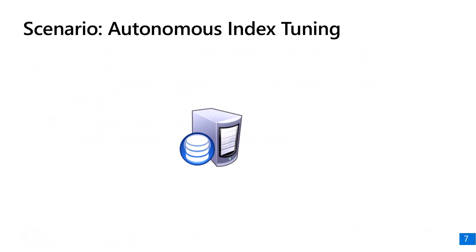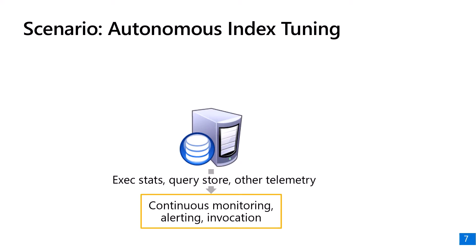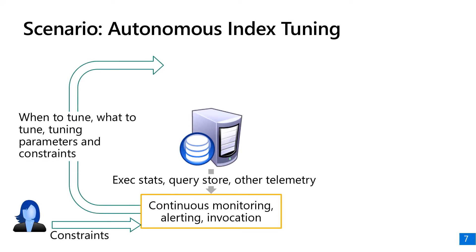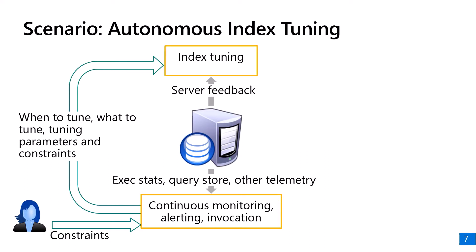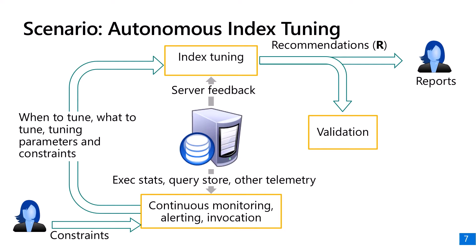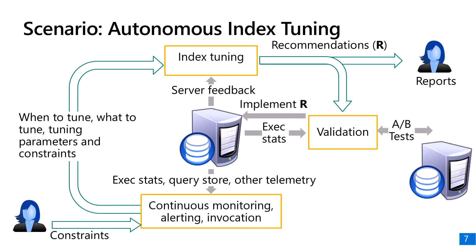Here is what a closed-loop index tuning solution will look like. The database continuously monitors its workload and signals if index tuning can significantly improve query performance. Upon invocation of index tuning, the database takes predefined constraints from the user, including the storage constraint, and the index tuning module comes up with a recommendation of indices. Then the system automatically implements the indices and validates the performance based on execution statistics from the database.